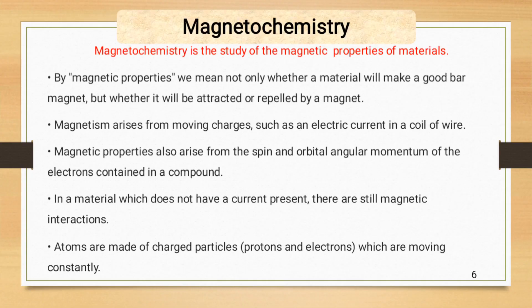What is magnetochemistry? Magnetochemistry is the study of the magnetic properties of materials. By magnetic properties, we mean not only whether a material will make a good bar magnet, but whether it will be attracted or repelled by a magnet or magnetic field.